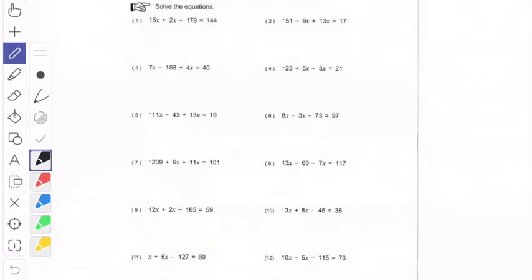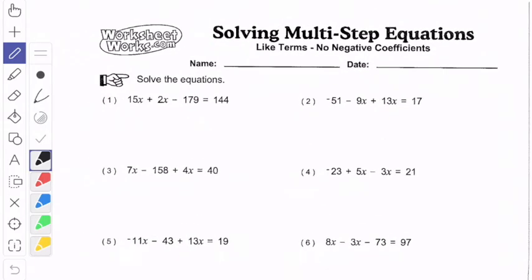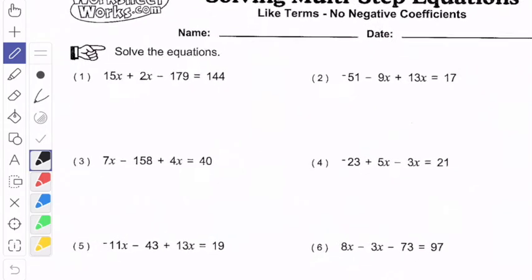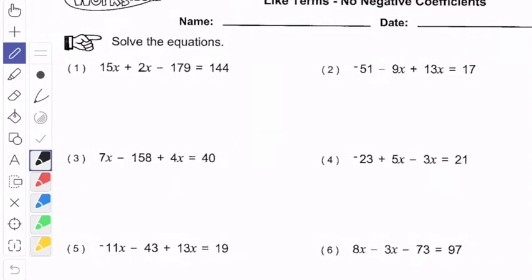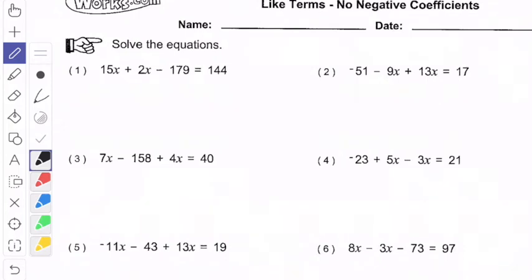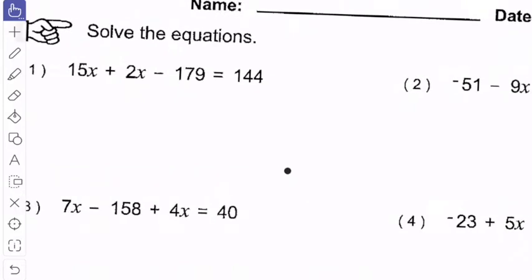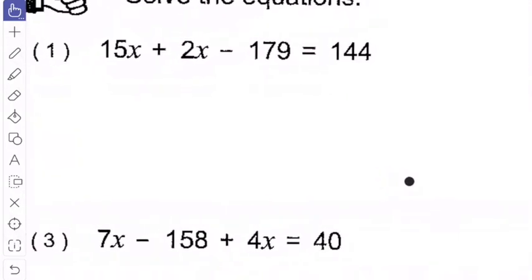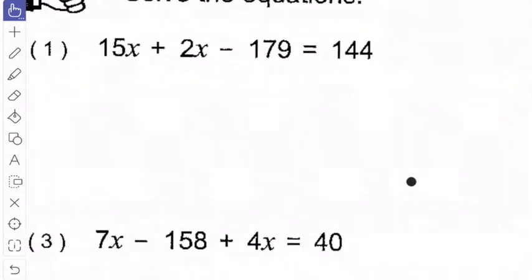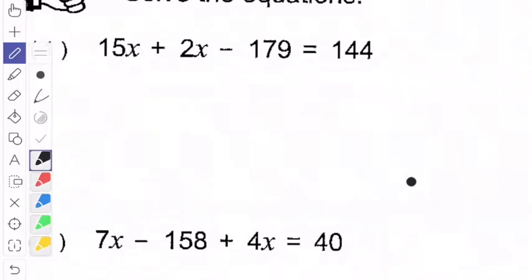Next page looks like this and what we're doing is solving. But the first thing that we need to do is combine like terms. So we're going to do two of these. The first one is 15x plus 2x minus 179 equals 144. Let me just make it a little bit bigger for us. Okay, so I need to combine like terms. So I see I have a 15x plus 2x so I can combine that.